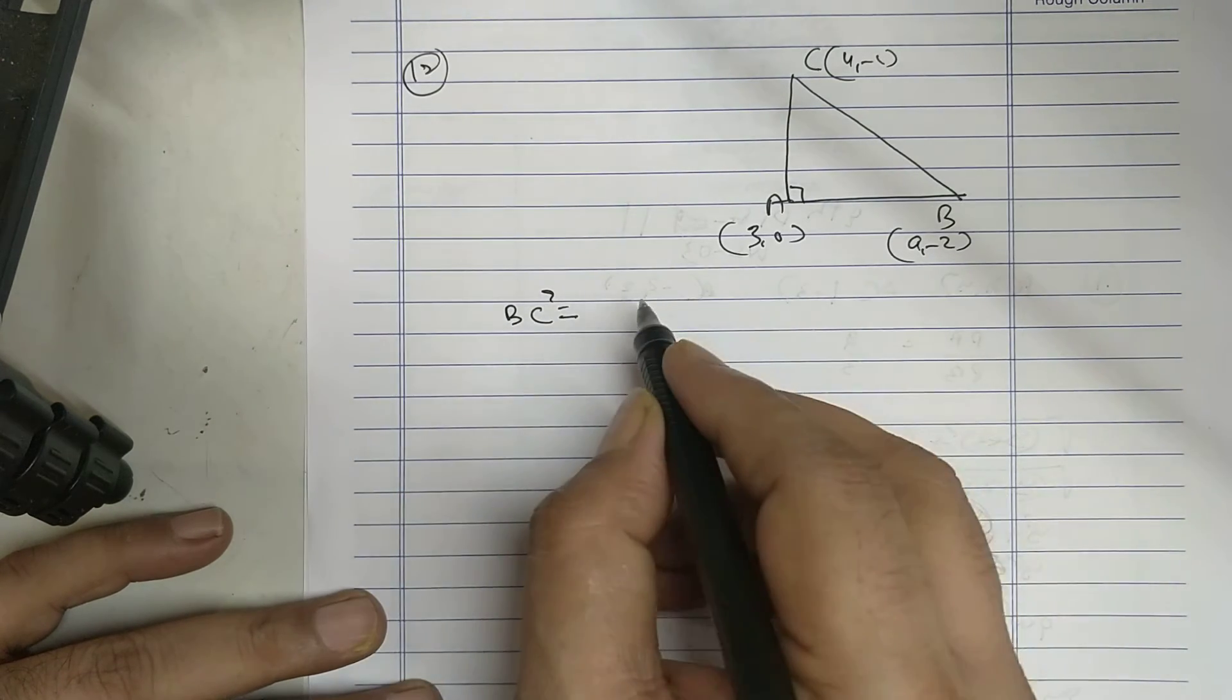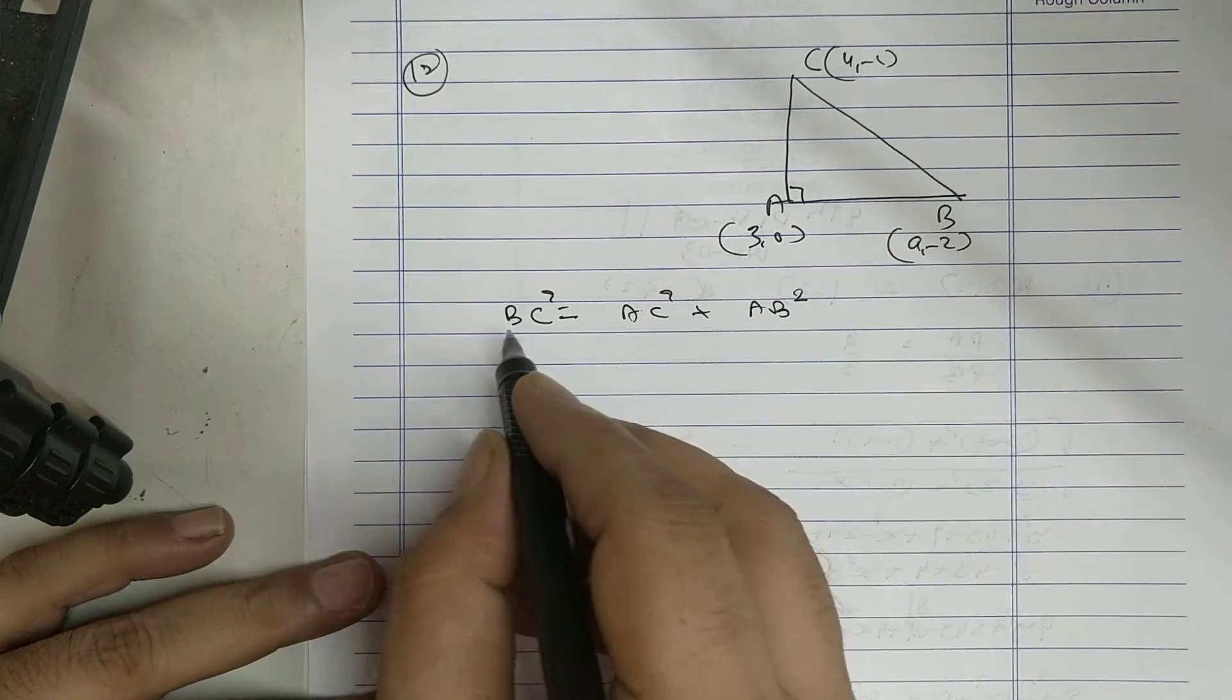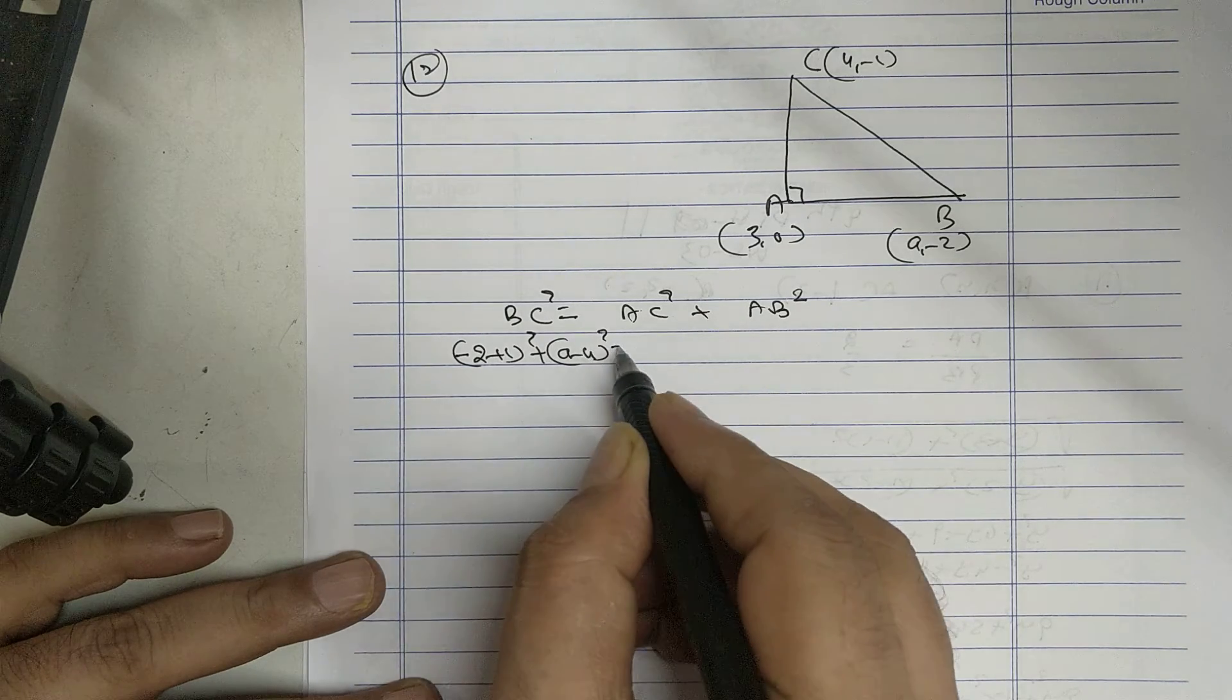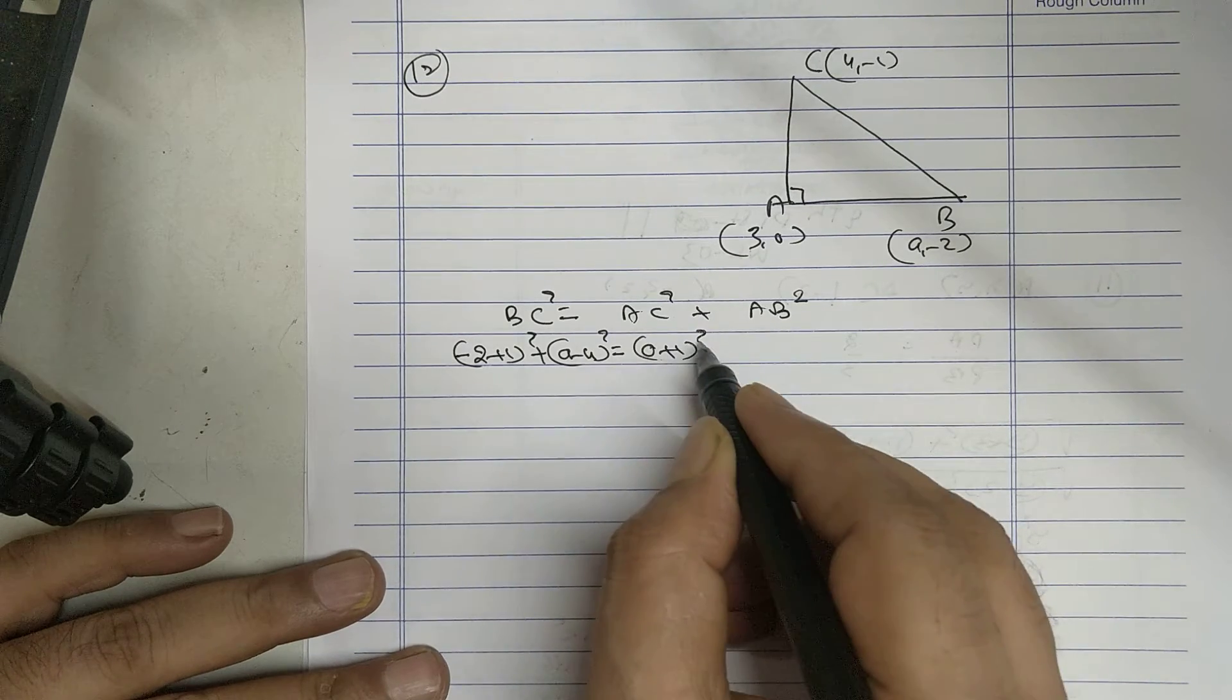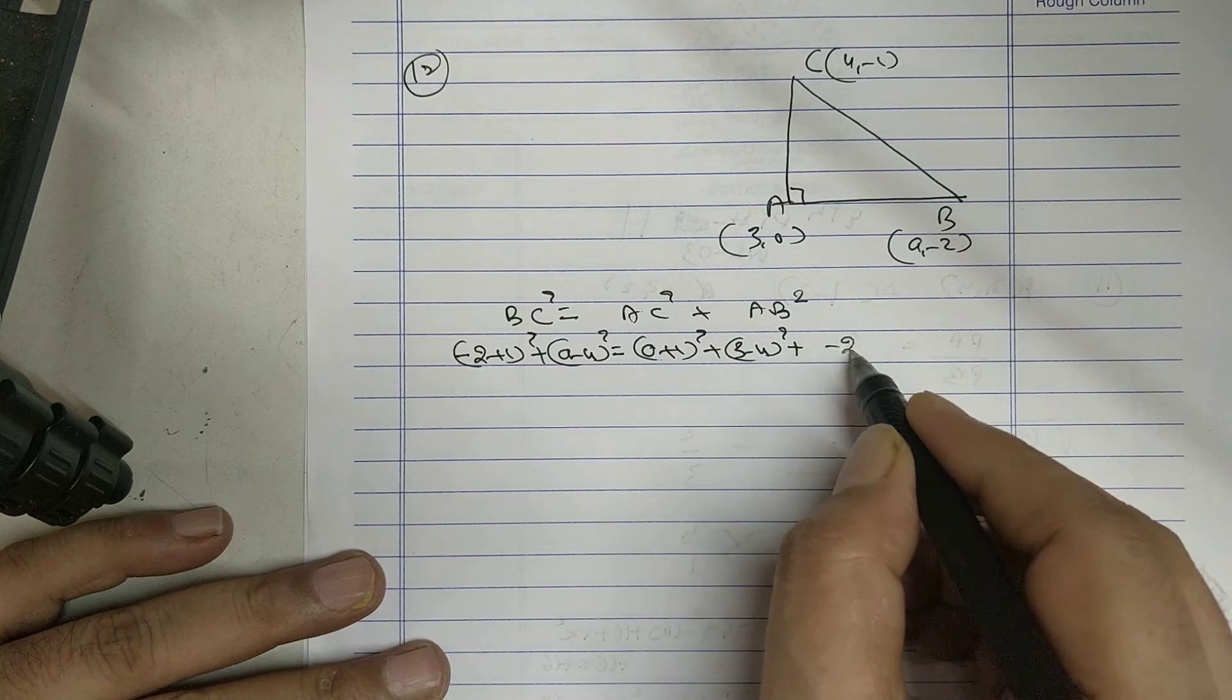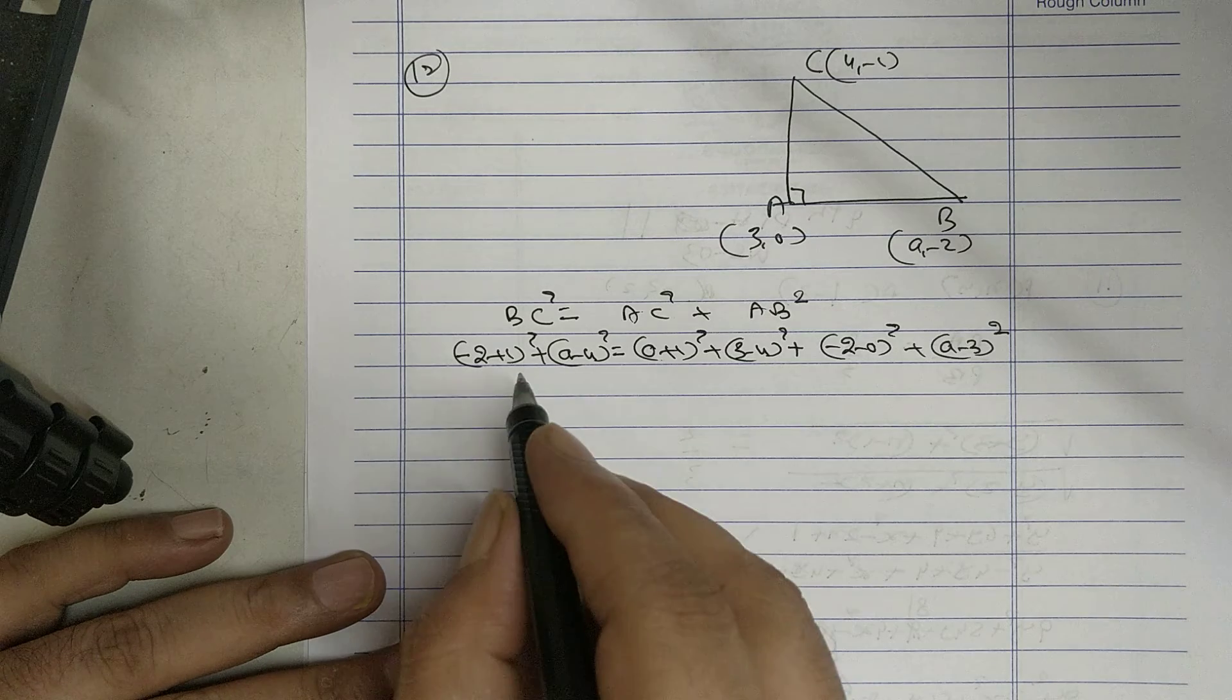BC square equals AC square plus AB square. BC: minus 2 plus 1 whole square, A minus 4 whole square. AC: zero plus 1 whole square, 3 minus 4 whole square. AB: minus 2 minus 0 whole square, A minus 3 whole square. 1.